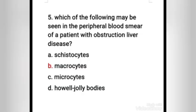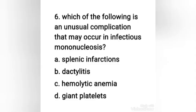Next question: which of the following may be seen in the peripheral blood smear of a patient with obstructive liver disease — schistocytes, macrocytes, microcytes, or Howell-Jolly bodies? The right answer is option B, macrocytes. In obstructive liver disease, red blood cells show an increased tendency towards lipid deposition on their surface, making them larger and more macrocytic than normal. This increased lipid deposition on the red cell surface is the reason for macrocytosis.